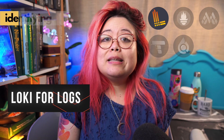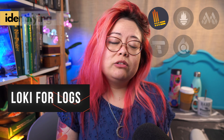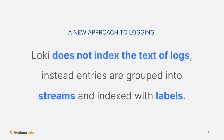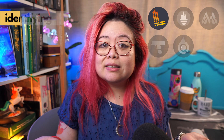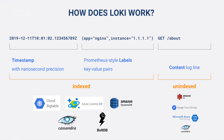Grafana's solution for that is Loki. Loki is a database for logs. Some of the cool things about it are that Loki only indexes the metadata instead of the full text of a log. So not only are queries faster, but the storage requirements are reduced since it effectively stores in object storage a table of contents rather than the entire book.